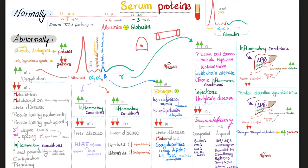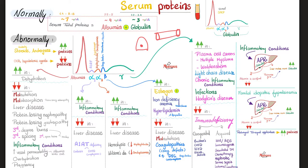Beta globulins include coagulation factors, transferrin, and beta lipoprotein. They increase with estrogen use, in iron deficiency anemia where decreased serum iron and ferritin prompt the liver to make more transferrin to capture more iron, and in hyperlipidemia for beta lipoprotein. Decreased beta globulins result from liver disease, malnourishment, and consumptive coagulopathies: in DIC all clotting factors are consumed — low fibrinogen, low prothrombin, all decrease. In hemophilia only factor 8 is missing, which isn't enough to visibly lower the beta globulin hump on electrophoresis, but in DIC the hump drops dramatically.